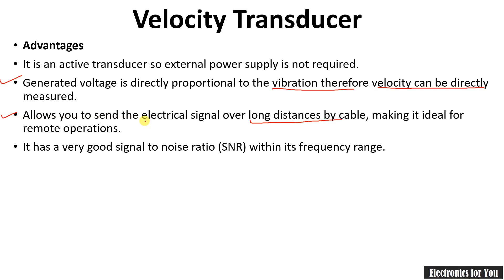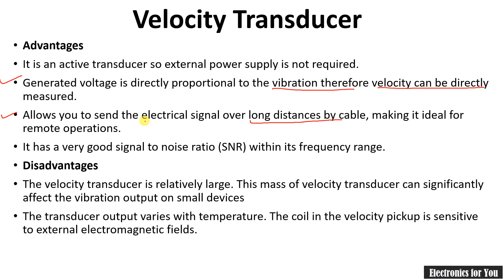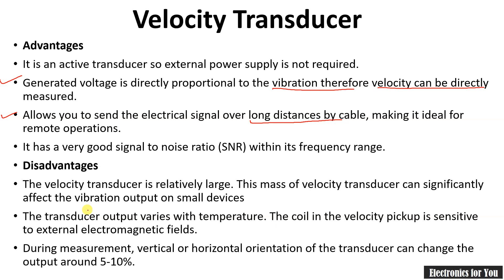The disadvantages of the velocity transducer: it is generally mounted on the target surface itself, so if the target surface is small, the weight of the transducer will affect the vibration, potentially giving wrong output. The transducer output varies with temperature. The coil in the velocity pickup is sensitive to external electromagnetic fields. During measurement, vertical or horizontal orientation of the transducer can change the output by around 5 to 10 percent.